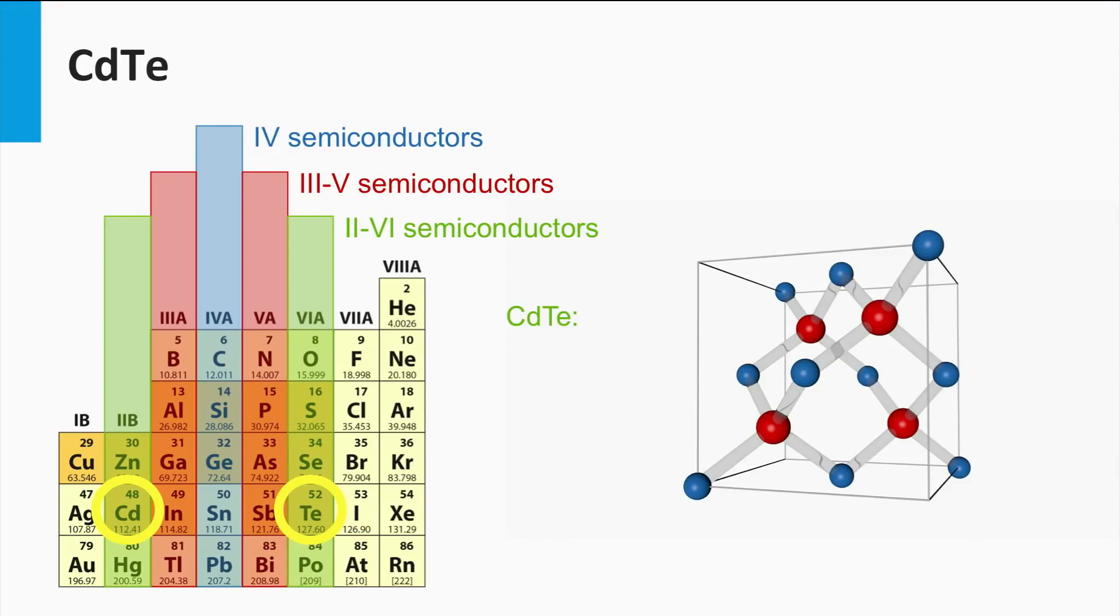Cadmium telluride has a direct band gap, consequently only a few microns of cadmium telluride is required to absorb all the photons with an energy higher than the band gap.